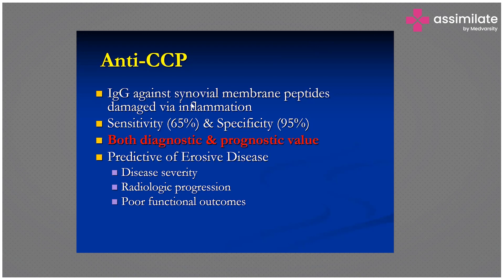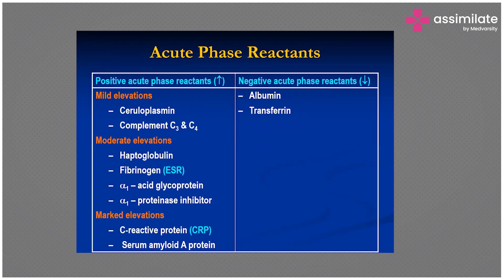For acute phase reactants, there is mild to marked elevation. Negative acute phase reactants include albumin and transferrin. Mild elevation includes ceruloplasmin and complement C3/C4. Haptoglobulin, fibrinogen, alpha-1 protein, and acid glycoprotein show moderate elevation. Marked elevation is seen in CRP and serum amyloid A protein.